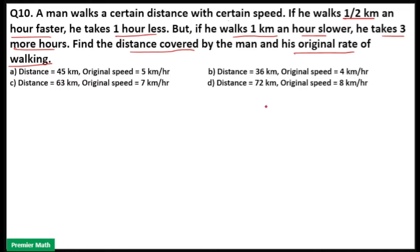Here, a man covers distance D with speed s. When he increases his speed by 1/2 km per hour, that is s plus 1/2, he takes 1 hour less to complete the same journey.